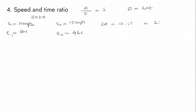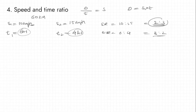The ratio simplifies to 2:3. The time ratio is 6:4, and the speed ratio is 2:3, with the time ratio being the inverse for the same distance.